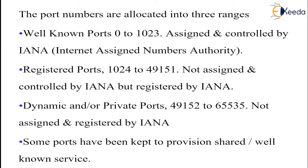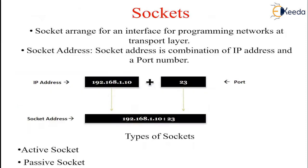Some ports have been kept for provisions shared or for well-known services. A network socket is one endpoint in a communication established between two programs running over the network, allowing communication between two different processes on the same or different machine. A socket address is a combination of IP address and port number. In networking, a socket is used to allow many processes within a single or different host to use TCP communication simultaneously. The socket is formed by combining the IP address with the port number to uniquely identify each separate data stream.